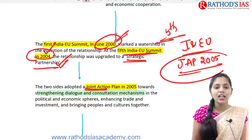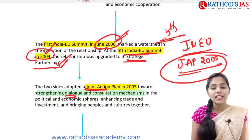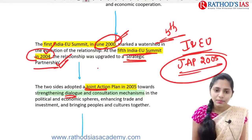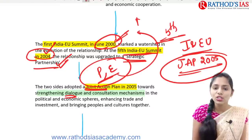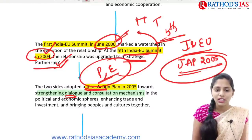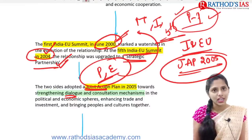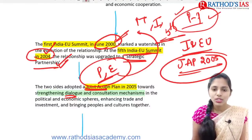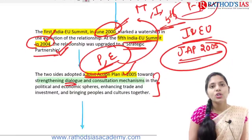The joint action plan of 2005 led to strengthening of dialogue and consultation mechanisms in some spheres like the political sphere and economic sphere. Further, that led to increasing trade and investment, and even built people-to-people contacts and people-to-people culture. These are some important areas regarding this joint action plan of 2005.